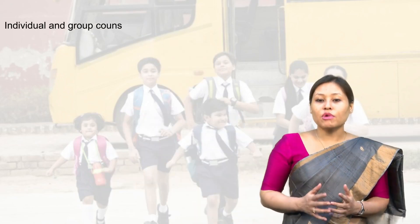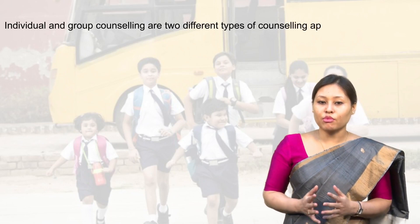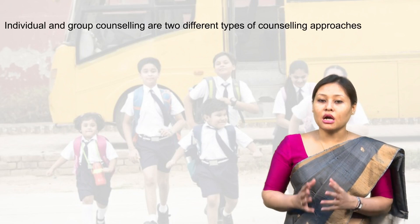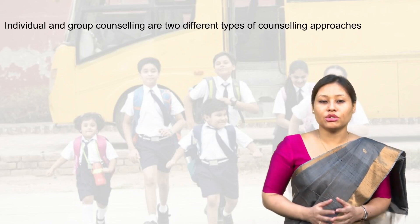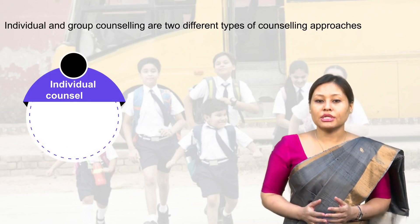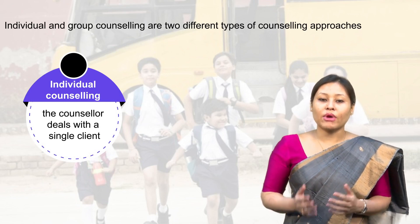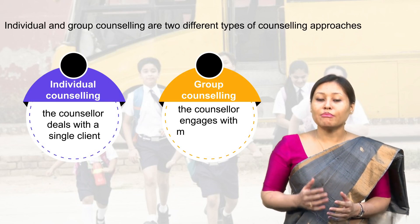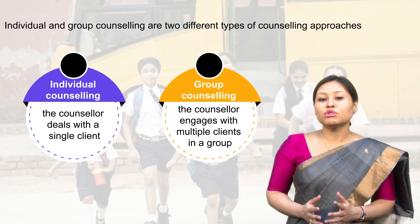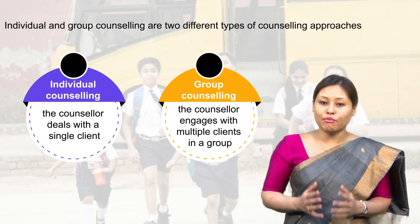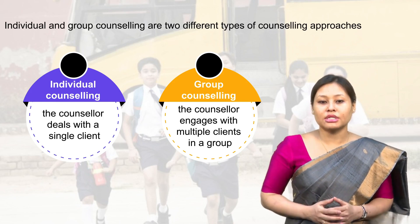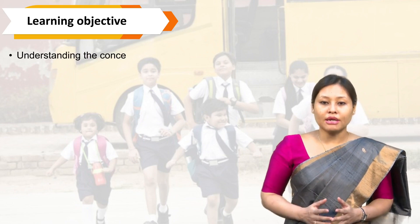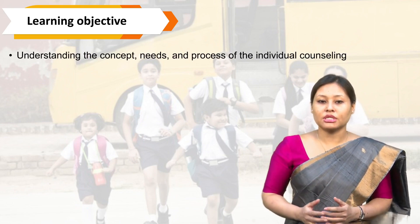Individual and group counseling are two different types of counseling approaches that are differentiated based on the number of clients a counselor engages in a session. In individual counseling, the counselor deals with a single client, whereas in group counseling, the counselor engages with multiple clients in a group. Both individual and group counseling have an important place in school counseling. The learning objective of this video is understanding the concept, needs, and process of individual counseling.